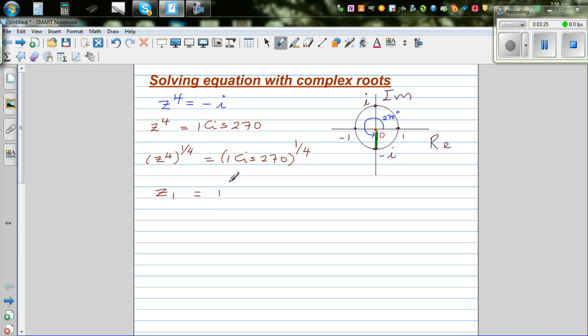So you can say this is your first root z1 would be 1 raised to 1 quarter cis 270 times 1 quarter. De Moivre's theorem says that you multiply the modulus—this is the modulus or the radial distance—by the power, and multiply the argument by this power.